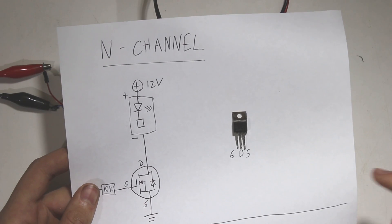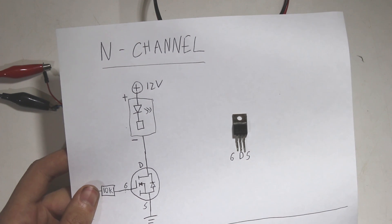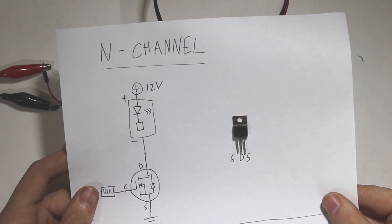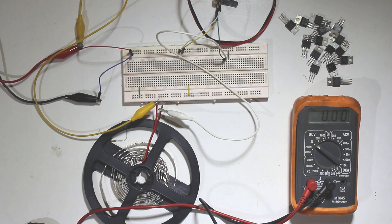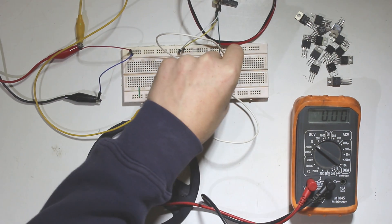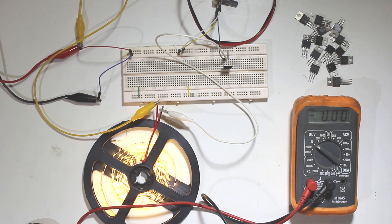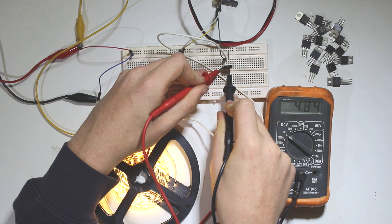Pretty much all MOSFETs use the standard for the pinouts, with the gate being on the leftmost pin. Now, I've got a whole lot of transistors here, and I'm going to show you now the best way to test which one will work best in your case. So let's start with this one, I'm just going to insert it, and I'm going to turn on, let's first check the gate source voltage, 4.8 volts.